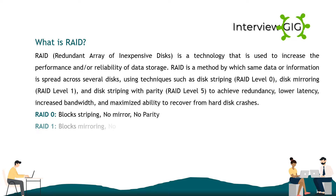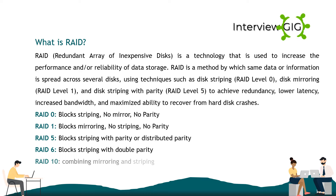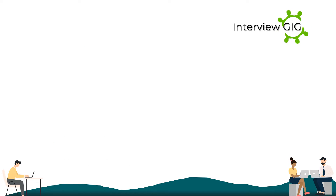RAID 0: block striping, no mirror, no parity. RAID 1: block mirroring, no striping, no parity. RAID 5: block striping with parity or distributed parity. RAID 6: block striping with double parity. RAID 10: combining mirroring and striping.